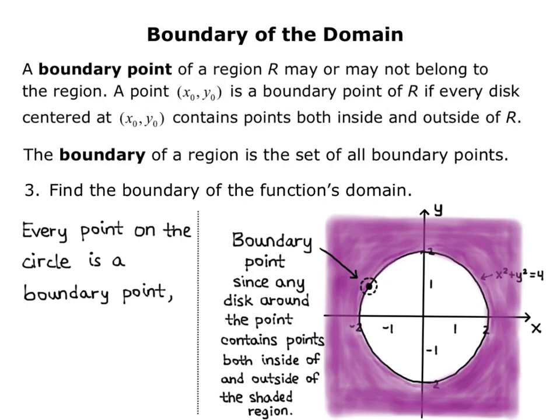Using this definition, every point on the circle is a boundary point. So, the boundary is x squared plus y squared equals 4.